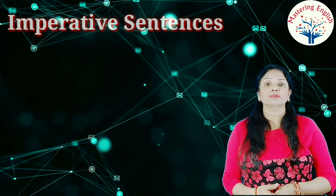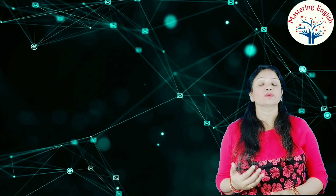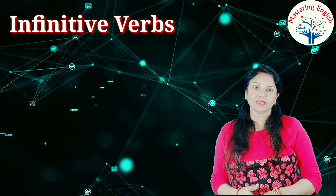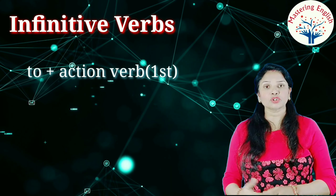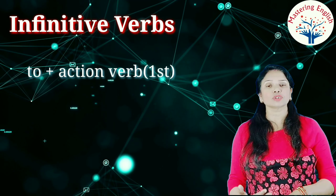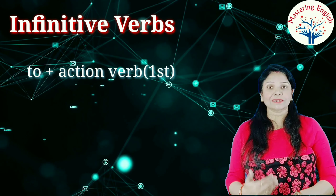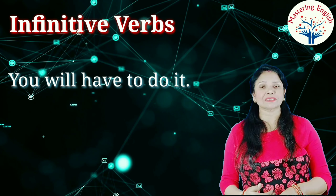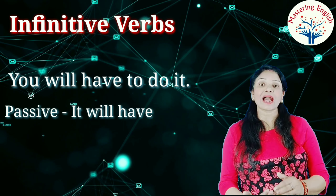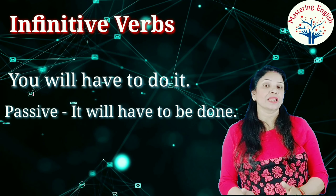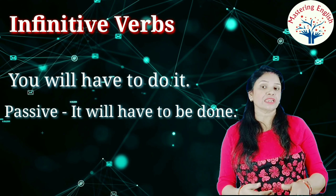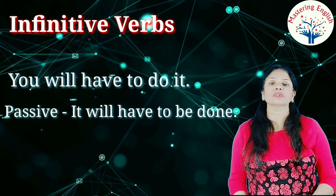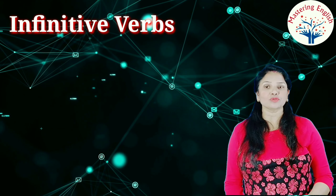Now I will teach you how to change a sentence with infinitive verbs into passive voice. An infinitive is 'to' plus the base verb — for example, 'to do it.' Take the sentence: 'You will have to do it.' In passive, it becomes: 'It will have to be done.' The infinitive 'to do' changes to 'to be done.' You should write 'by you' at the end, though it is not strictly necessary.